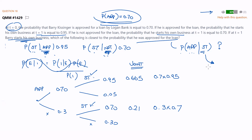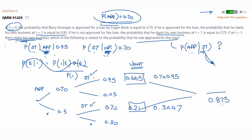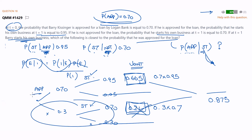The information we have is that the business was started, so we are either in the approved path or the not-approved path. Add them together - that's your denominator: 0.665 plus 0.21 equals 0.875. Given it started, we're in one of these two. We want the probability he was approved - this is our universe, we can only be in one of these two. Which box was he approved? Up here only, in this box. So 0.665 over 0.875 gives 76%. And 65% of you got 76%.